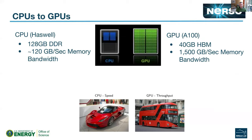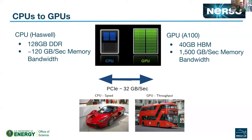Looking at the comparison: on a Haswell CPU node in Cori you have 128 GB of DDR, whereas on a single GPU on Perlmutter you have 40 GB of HBM (high bandwidth memory). Haswell provides 128 GB/s of memory bandwidth — pretty good for a CPU of that generation. But when you go to the A100 GPUs utilizing on-device memory, you can get up to around 1,500 GB/s of memory bandwidth.